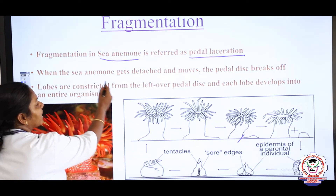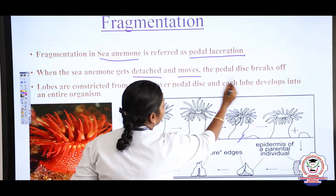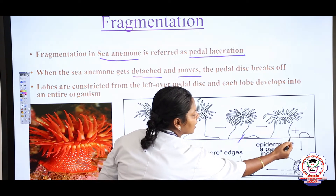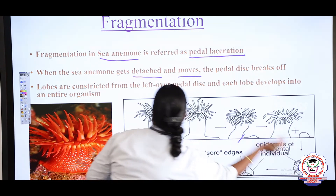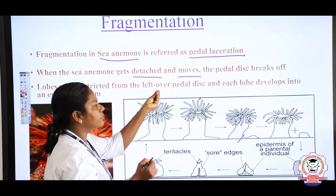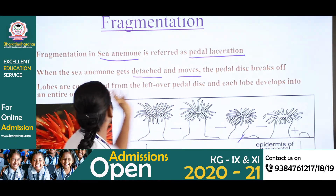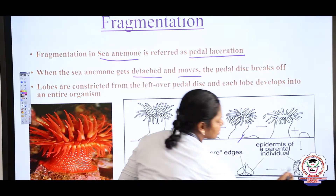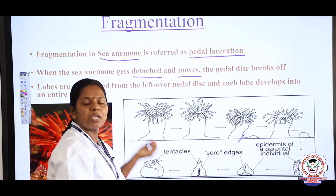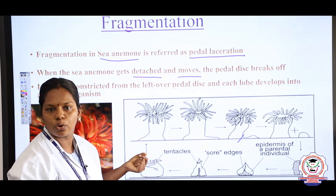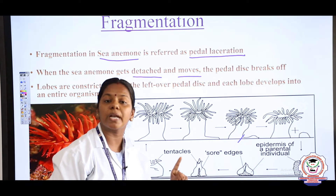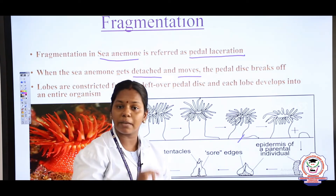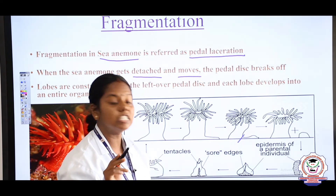When the sea anemone moves, the pedal disc breaks off, and lobes are constricted from the leftover pedal disc. Each lobe develops into the entire organism — many lobes are formed, and from each lobe an individual sea anemone grows. This is pedal laceration in sea anemone. Next we will study fragmentation in tapeworm.